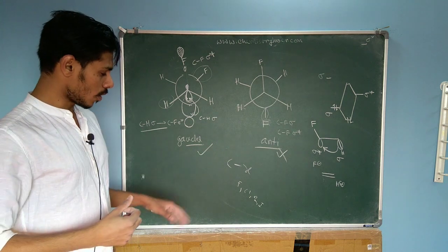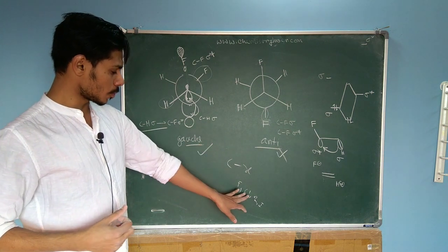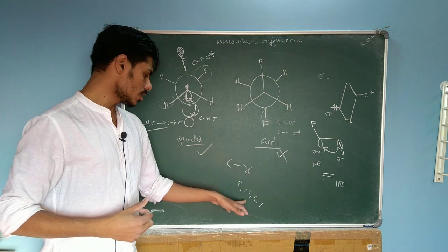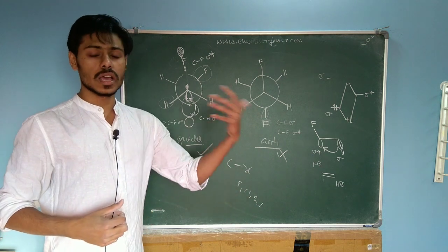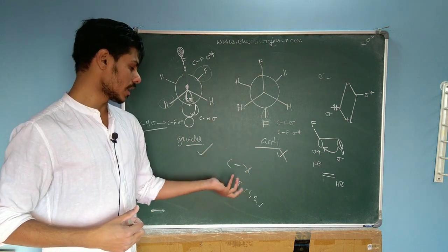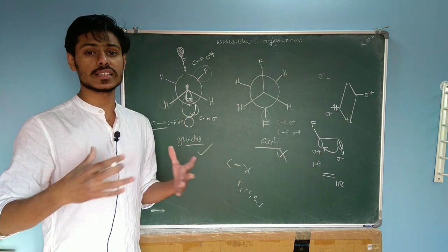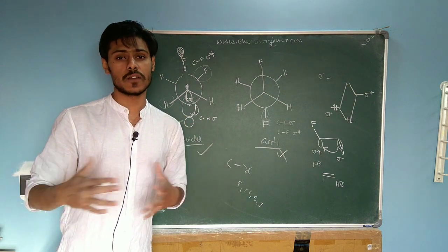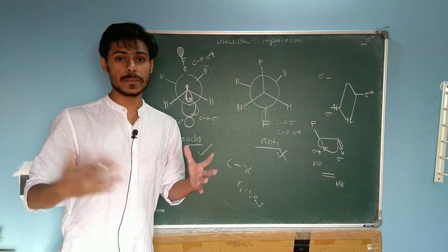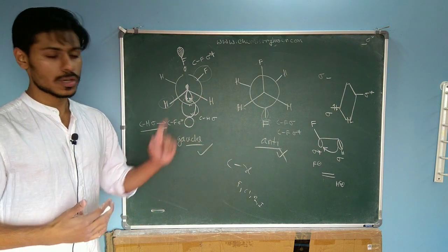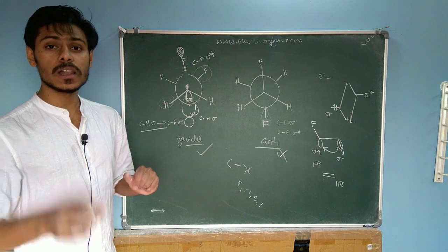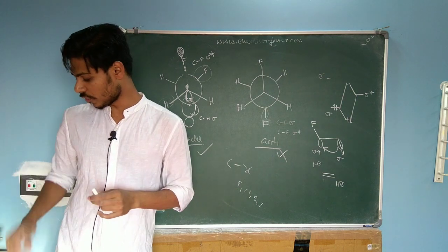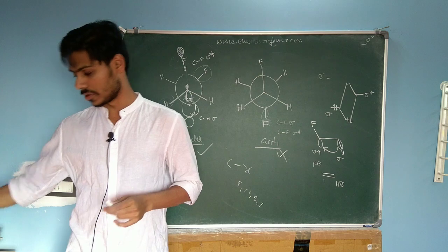Another reason why the gauche effect is not seen for chlorine, bromine, and iodine is their size. The size of chlorine, bromine, and iodine is much bigger than fluorine, and in their cases steric hindrance and Coulombic repulsion play a very important role in destabilizing the gauche form. So the gauche effect is only possible for the C-F bond and not for other carbon-halogen bonds.